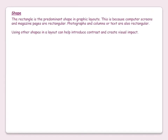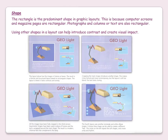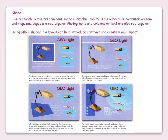The rectangle is the predominant shape in graphic layouts. This is because computer screens and magazine pages are rectangular. Photographs and columns of text are also rectangular. Using other shapes in the layout can help introduce contrast and create visual impact. In the first example, all of the shapes are rectangular and none are particularly bigger than the rest — there is no dominant feature. When we move to the second example, cropping the main image introduces another shape, making it less formal and more contemporary, but the layout is still too bland and the text looks clumsy.